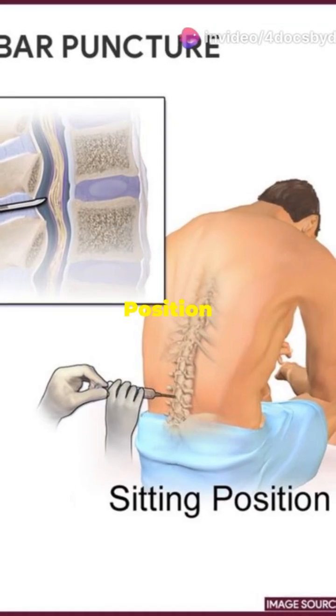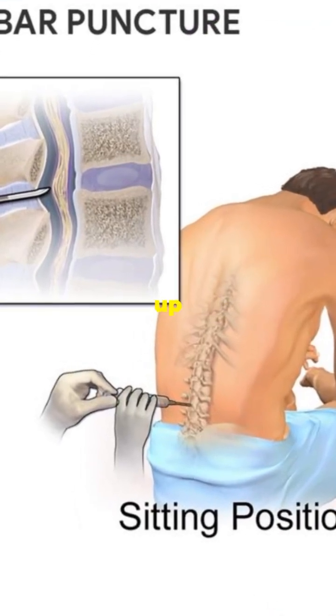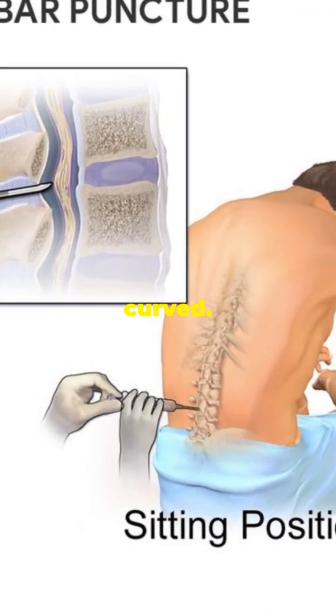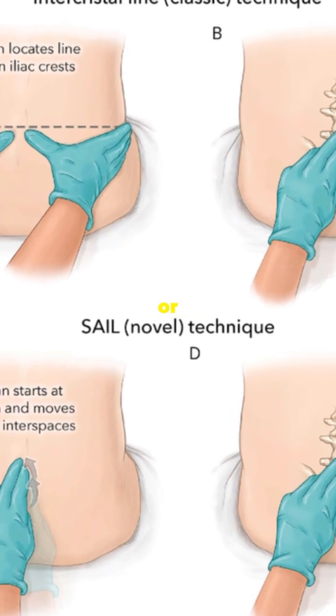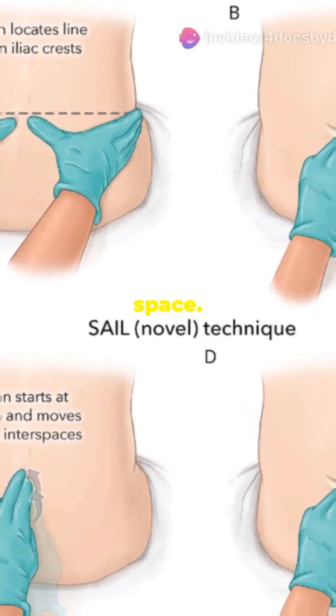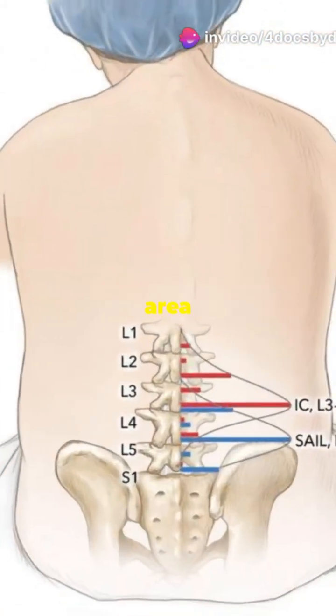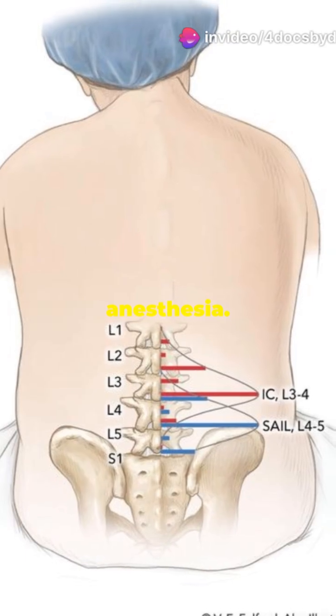Position the patient lying on their side or sitting up with their spine curved. Identify the L3-L4 or L4-L5 space. Clean the area and apply local anesthesia.